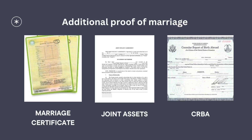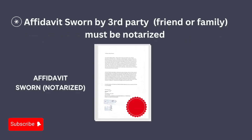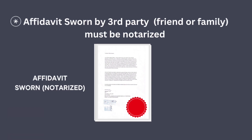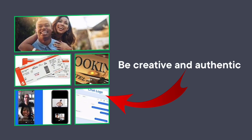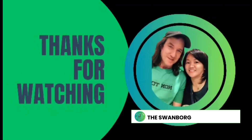Additional proof of marriage: you have to prove that you have a bona fide marriage. Be specific with the evidence, such as marriage certificate, shared finances, joint assets like land or property, birth certificates of children together, affidavits from a third party who knows your relationship (must be notarized), and relevant documentation of your ongoing relationship such as pictures together, hotel bookings, air tickets, remittances, chat logs, and video logs. Be authentic and creative in convincing USCIS that you have a bona fide marriage.